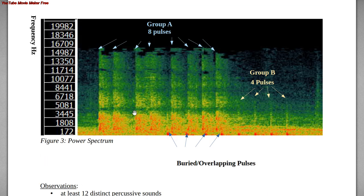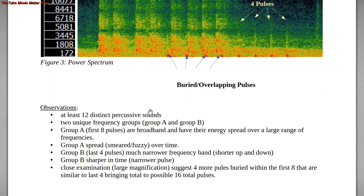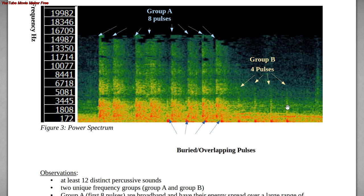A couple of other observations: the signals at the end of this segment are much narrower and well-defined. The signals earlier are smeared — rather than being a straight up-and-down line like the last four, they have energy spread out over a fairly large period of time relative to the peak-to-peak time, which normally indicates quite a few reflections.